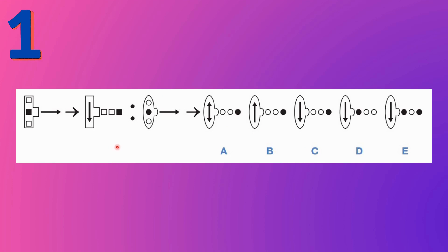Here, the arrow is pointing to the right side, and when you see the second transformed pattern, it is inside the box pointing down, which means the arrow has been turned clockwise. The arrow pointing to the right is turned clockwise so it will point down and go inside the box.